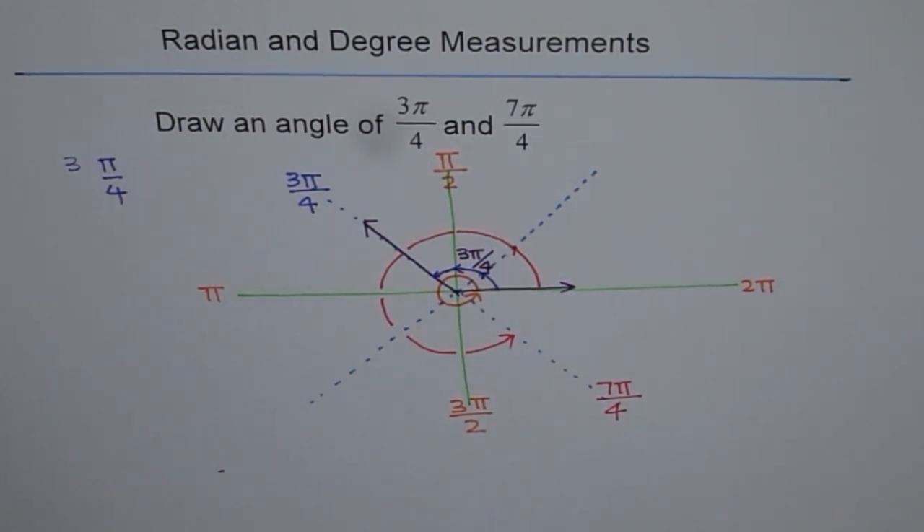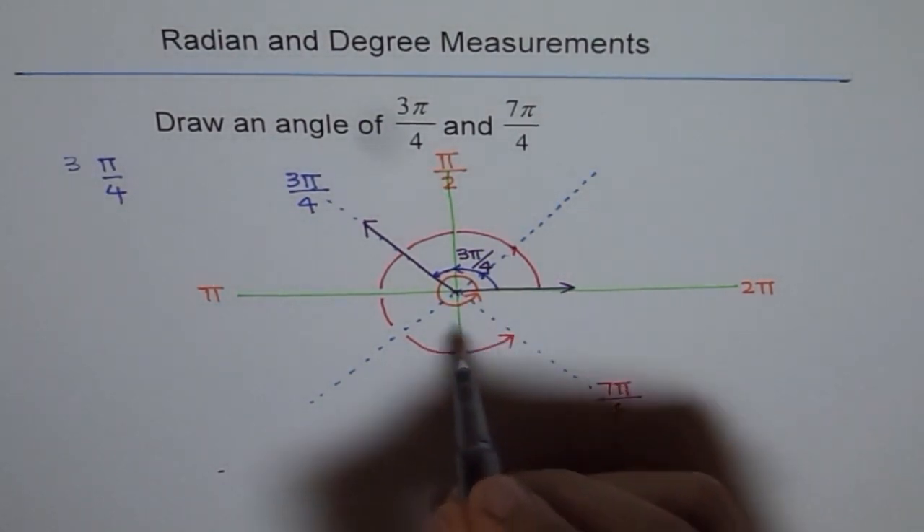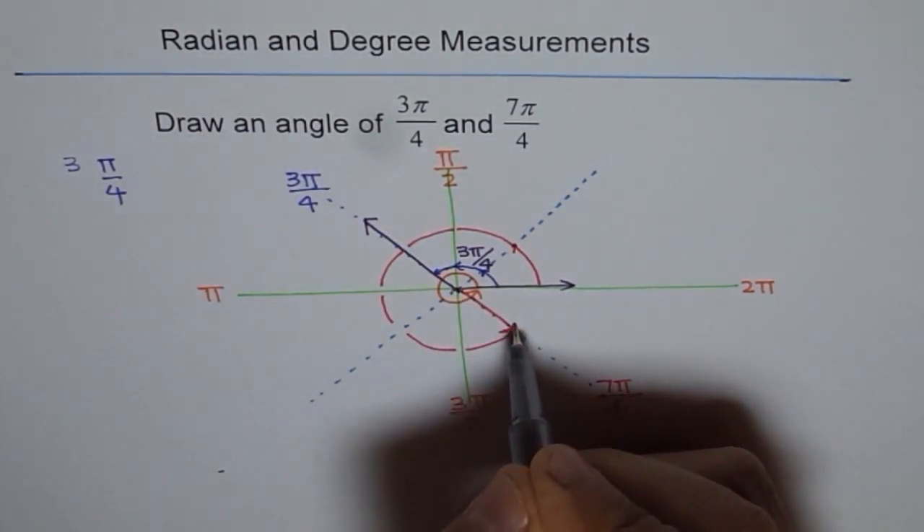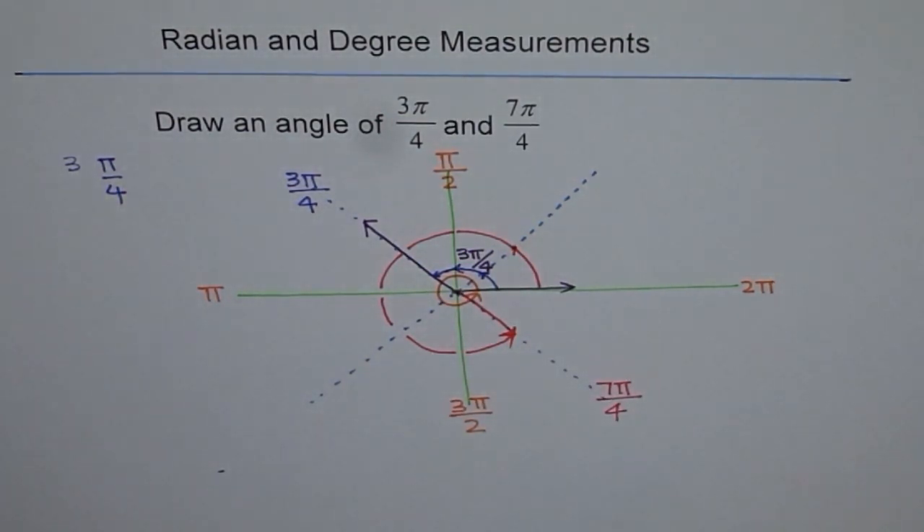So that's how easy it is. So for 7π/4 my initial arm will rest along with the x-axis and the terminal arm will be on this side. And this red line will give me 7π/4. Do you understand?